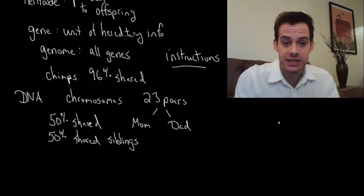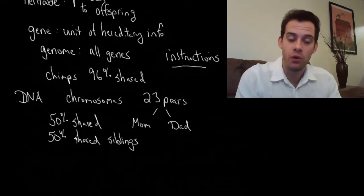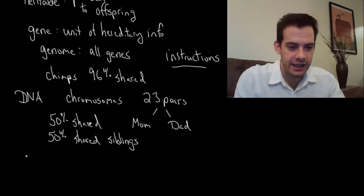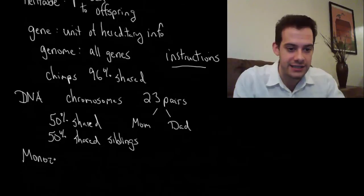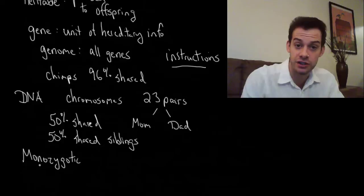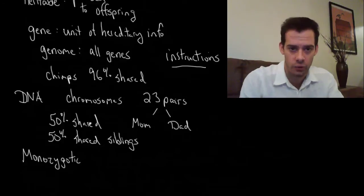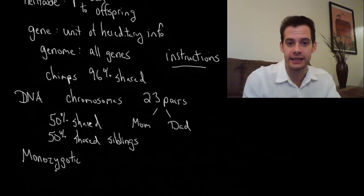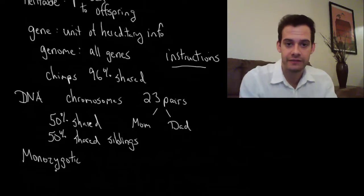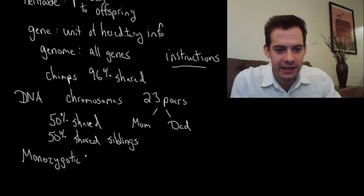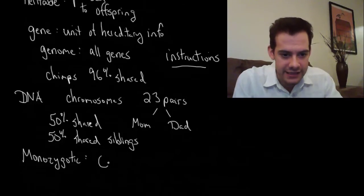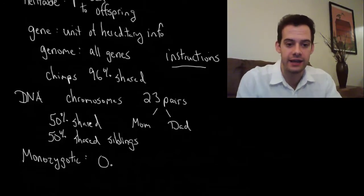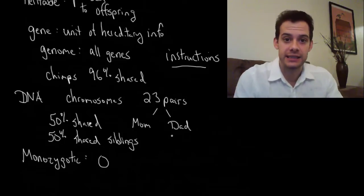There is an exception with siblings and this is that some siblings share more than 50% of their genes and these are identical twins. Or if we want to sound more scientific we can call them monozygotic twins. This is just Greek for one zygote. A zygote is a fertilized egg. It's an egg and a sperm cell that have come together. What happens in monozygotic twins is that we have this single fertilized egg. One sperm cell, one egg and then what happens is it splits and becomes two people.